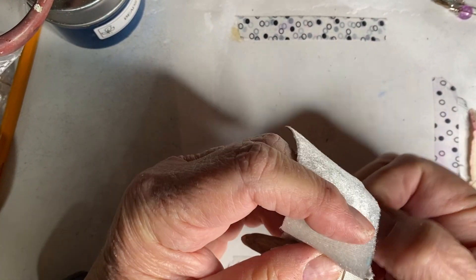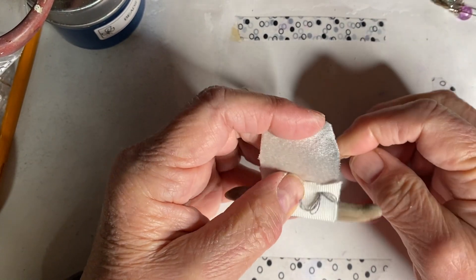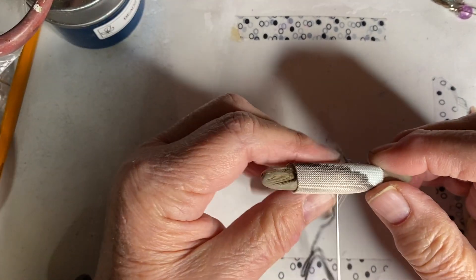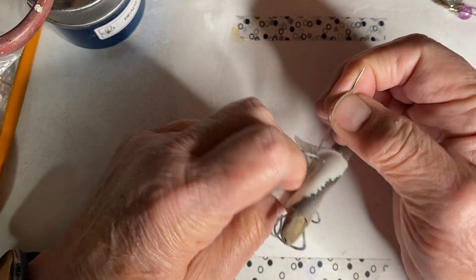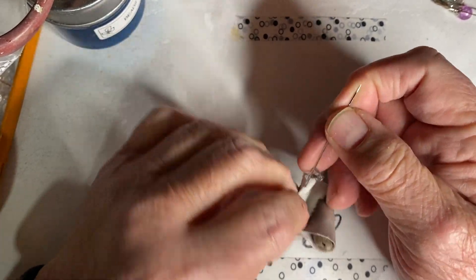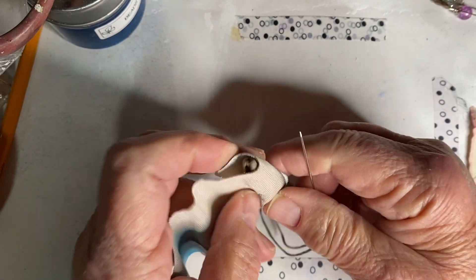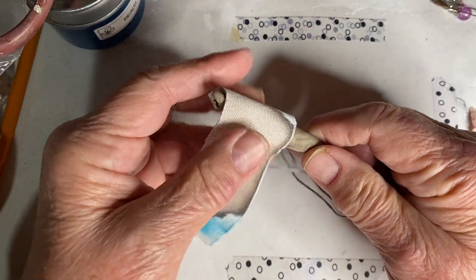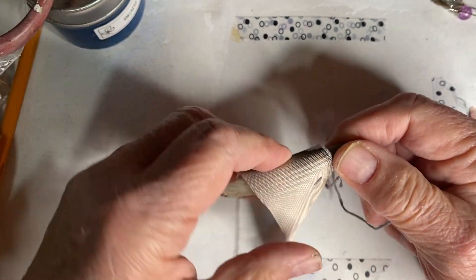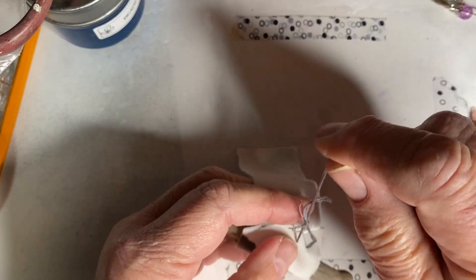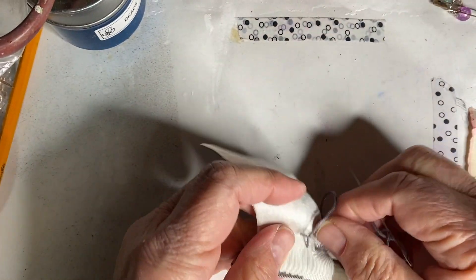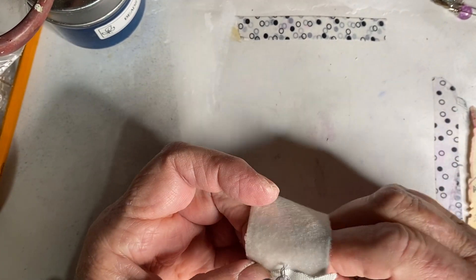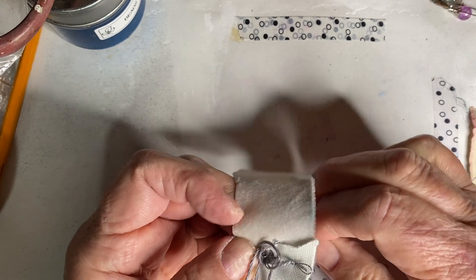I'm going to sew it to the back, so my knot is going to be on the back side of it. I'm just going to do a running stitch. I'll try to keep it on the driftwood. Get a couple more stitches on here, I think it'll be stable. I hope it'll be stable.